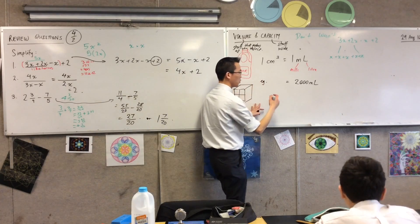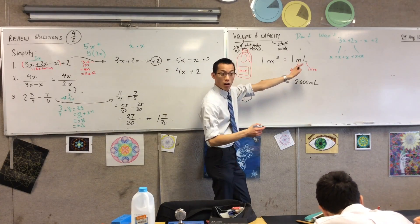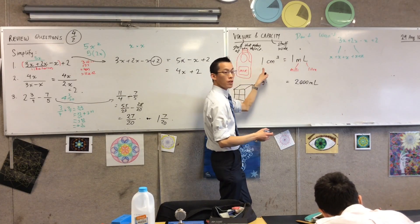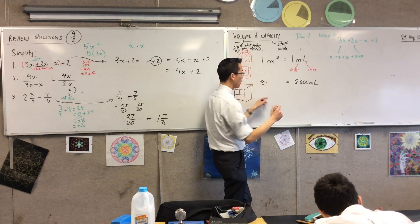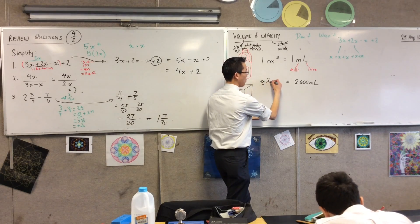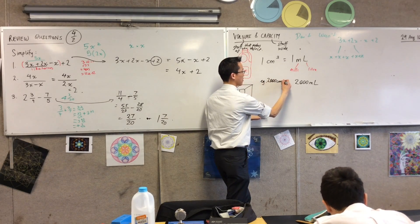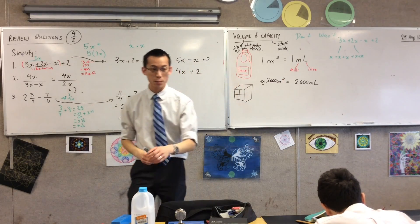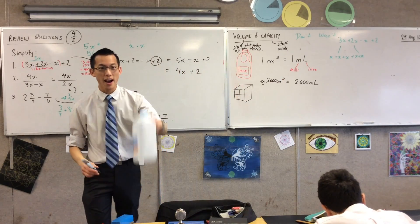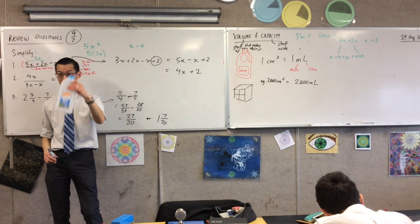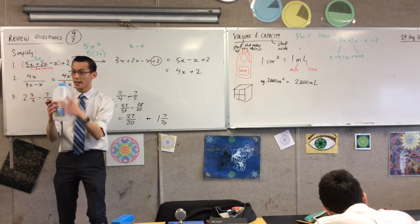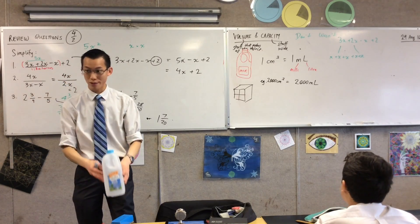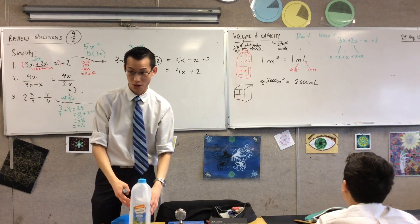Christian suggests two litres — but hold on, we already have a capacity of two litres. What will the volume be? I had someone do some measurements for me. Can you tell me what measurements you actually got?